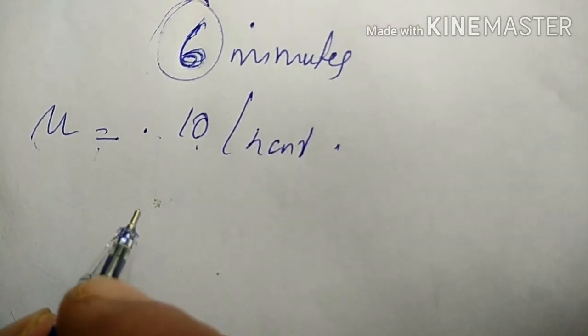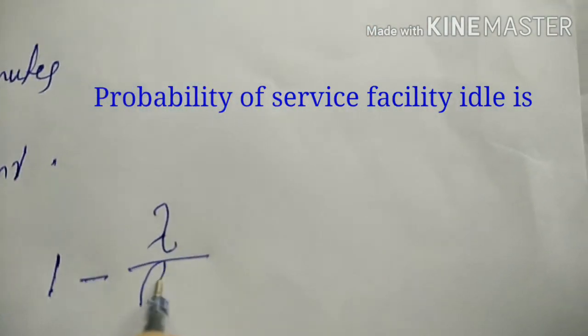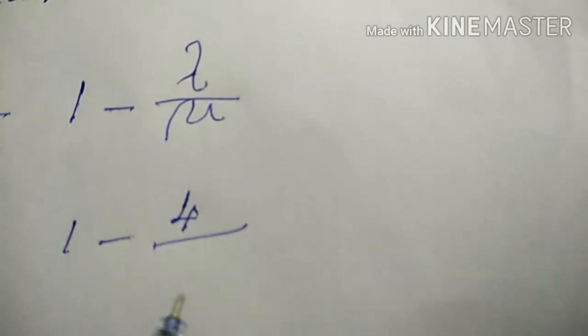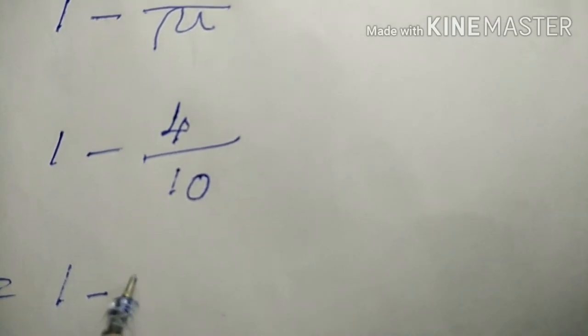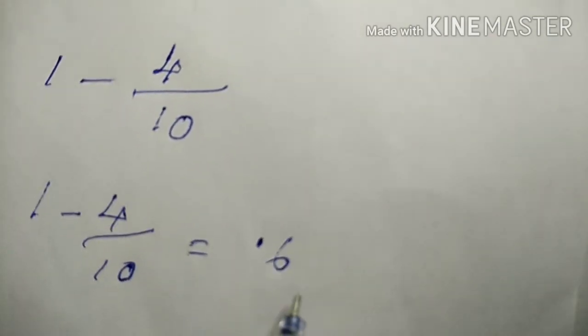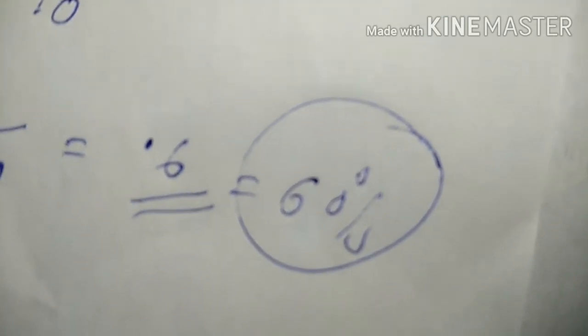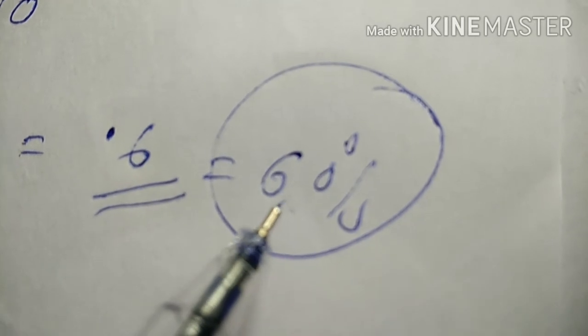The probability that the service facility is idle equals 1 minus lambda divided by mu, which is 1 minus 4 divided by 10, equals 0.6, or 60%. There is a 60% chance the system is idle.